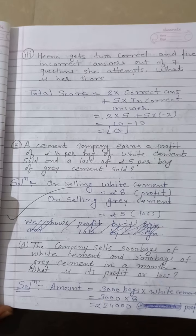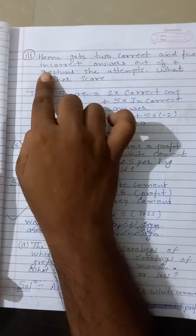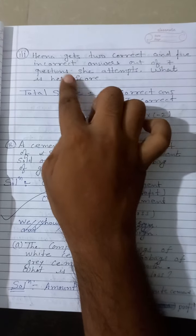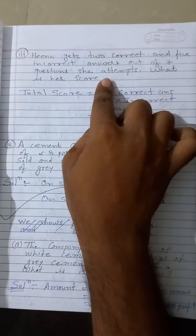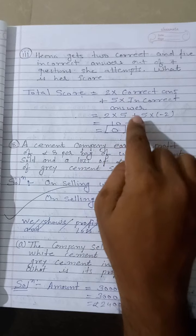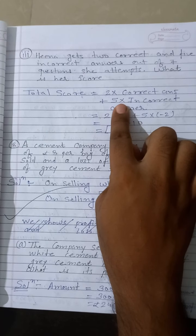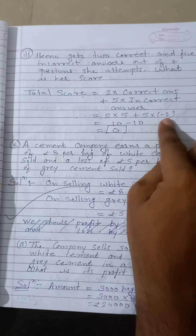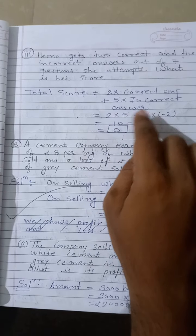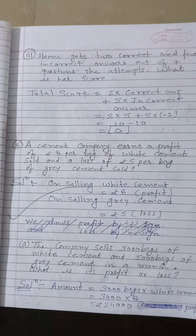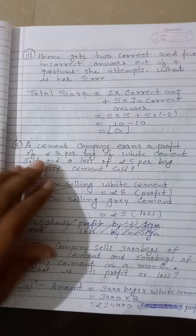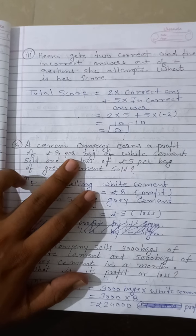Third part: Heena gets two correct answers and five incorrect answers out of seven questions attempted. Two correct answers times five marks equals ten. Five incorrect answers times minus two equals minus ten. Ten minus ten equals zero. Heena's score is zero marks.